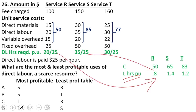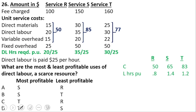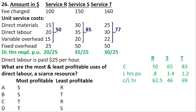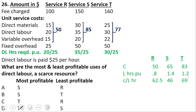Labor hours required per unit: 20 ÷ 25 = 0.8 for R; 35 ÷ 25 = 1.4 for S; and 30 ÷ 25 = 1.2 for T. Now we calculate contribution per labor hour: for R it is $50 ÷ 0.8 = $62.50; for S it is $65 ÷ 1.4 = $46; and for T it is $83 ÷ 1.2 = $69 per hour.